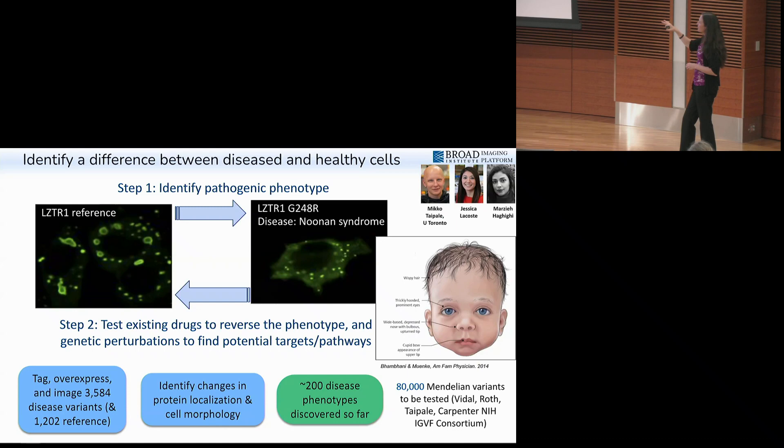To get over this bottleneck of how are we going to do 200 drug screens at once, there is pooled optical profiling, a method developed by Paul Blainey at MIT. We've been collaborating with him to adapt it so that we can take all 200 mutated versions of a protein as well as the reference counterparts, put them all in a single well together, and add one compound to that well. We use barcoding to figure out which cell has which version of the protein so we can do a drug screen in a much more efficient way.